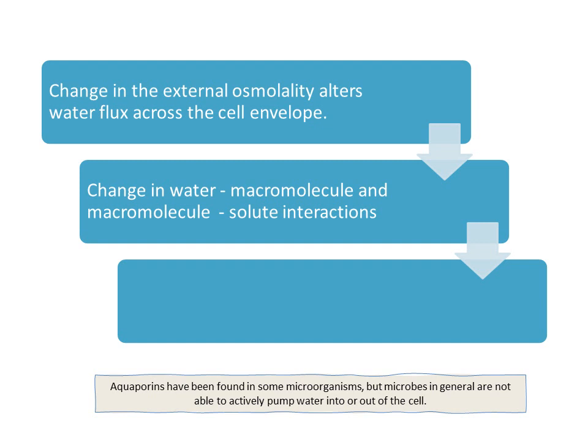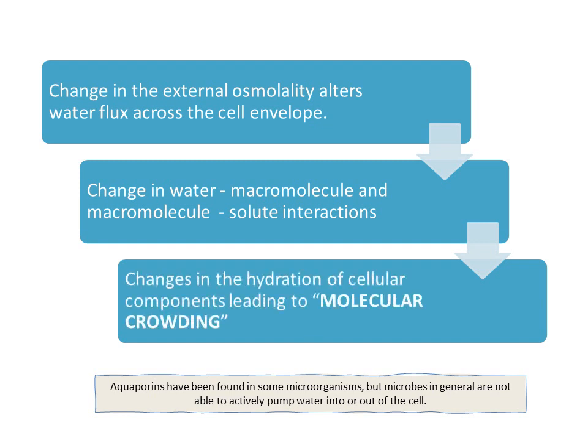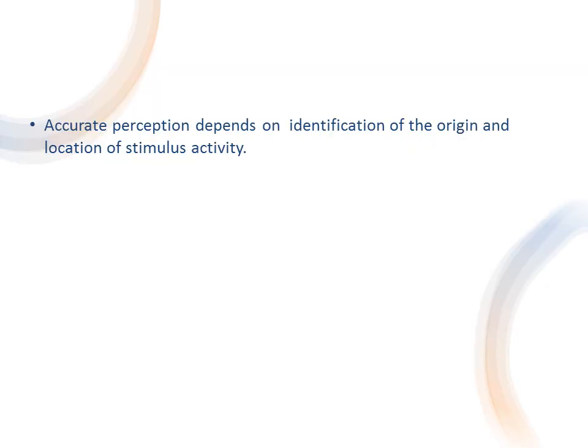Whenever this flux changes, the interactions between water and macromolecules — DNA, RNA, and proteins — will change, as will interactions between these macromolecules and metabolites and ions. In general, macromolecules remain surrounded by water molecules, present inside a cushion-like cage. When hydration changes, these interactions are broken and the macromolecules tend to come close and aggregate around each other — this process is called molecular crowding.